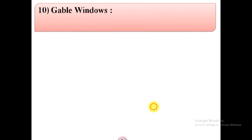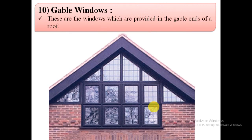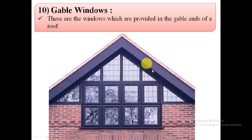The next type is gable windows. Gable windows are windows which are provided in the gable end of a roof, as shown in the image.